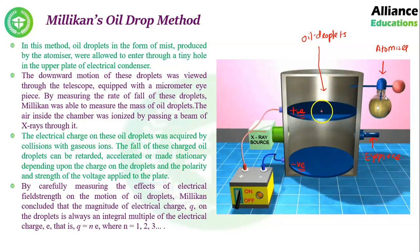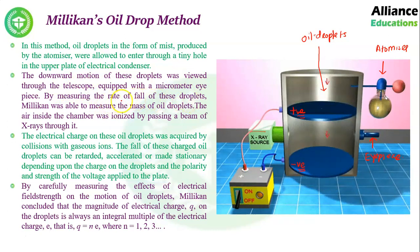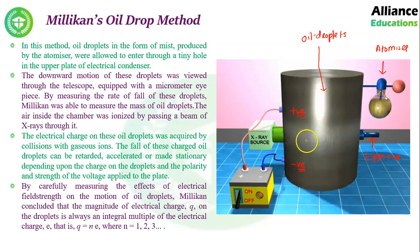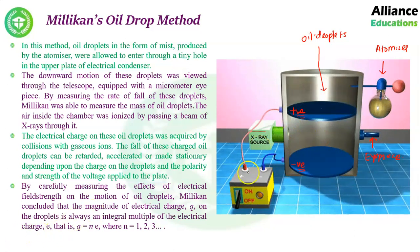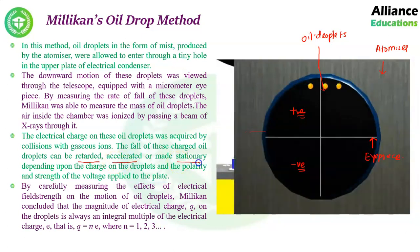When oil comes down from the atomizer, there is a fine hole through which the fine droplets go down. Using the telescope with the micrometer eyepiece, Millikan measured the rate of fall of the droplet. The X-ray source present in the setup ionizes the gas inside, so a negative charge comes on the oil droplets. Different types of charges come on them due to ionization. This causes retardation, acceleration, or the droplets may become stationary — depending on the charge on the droplets.